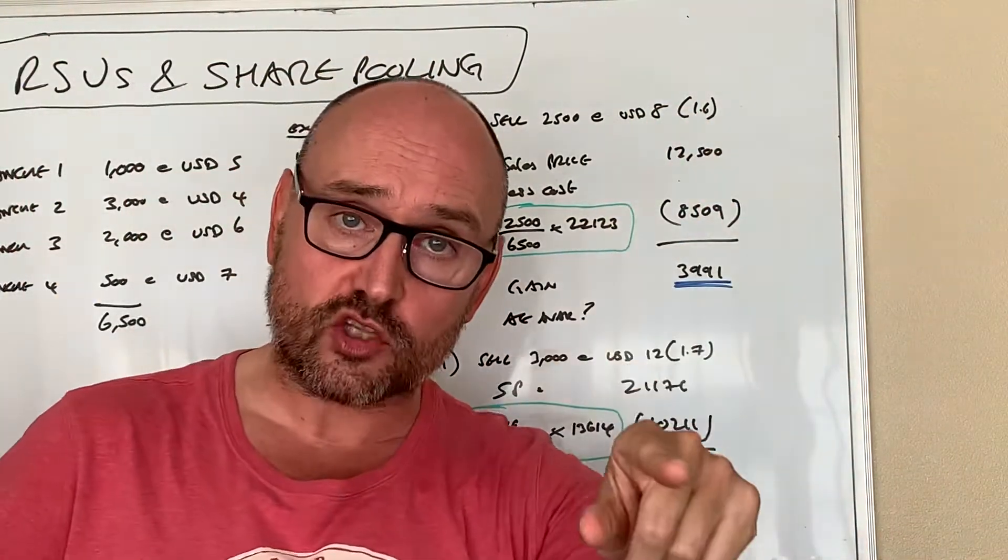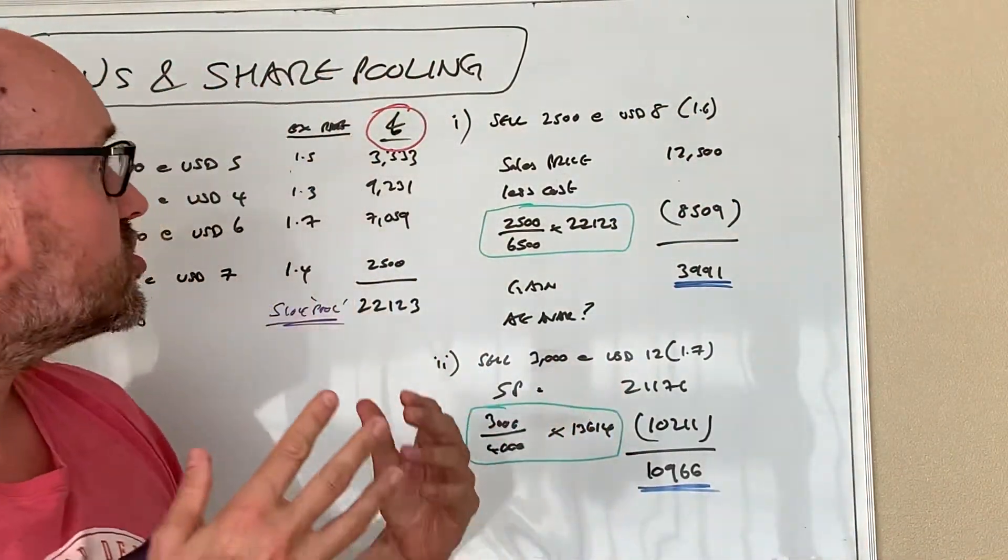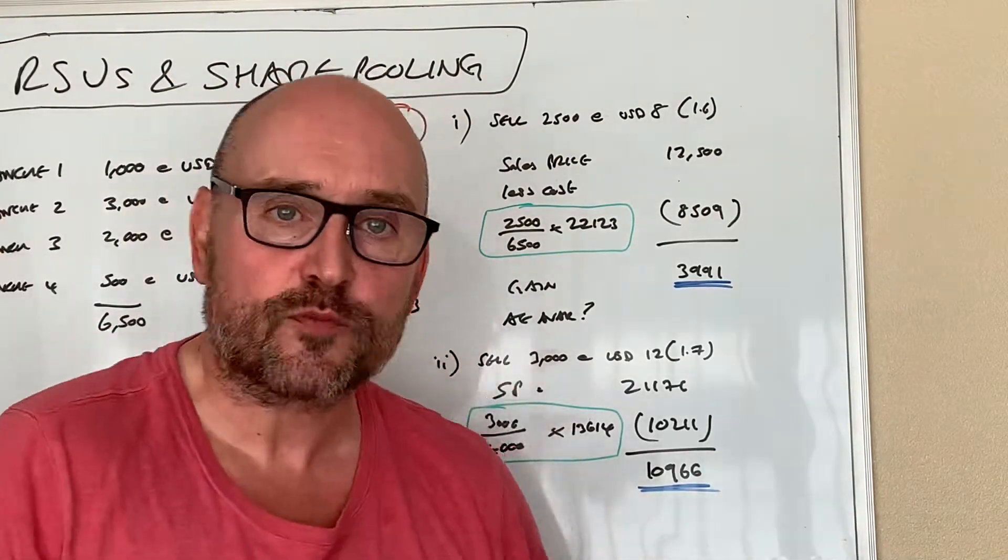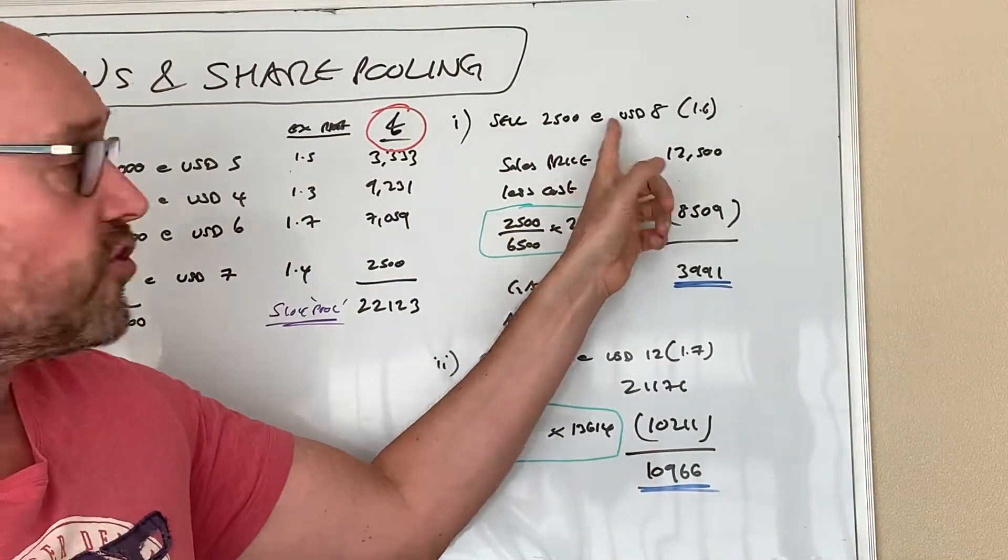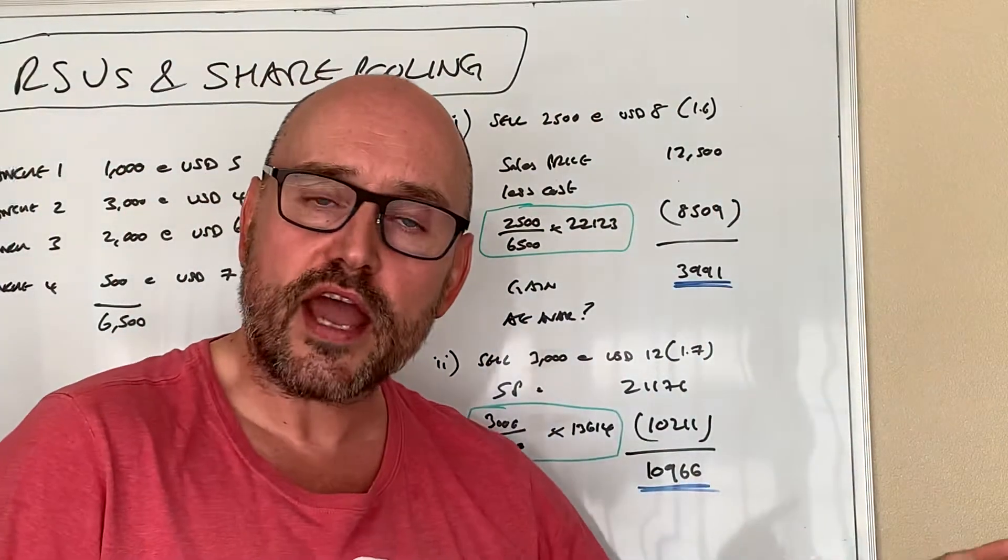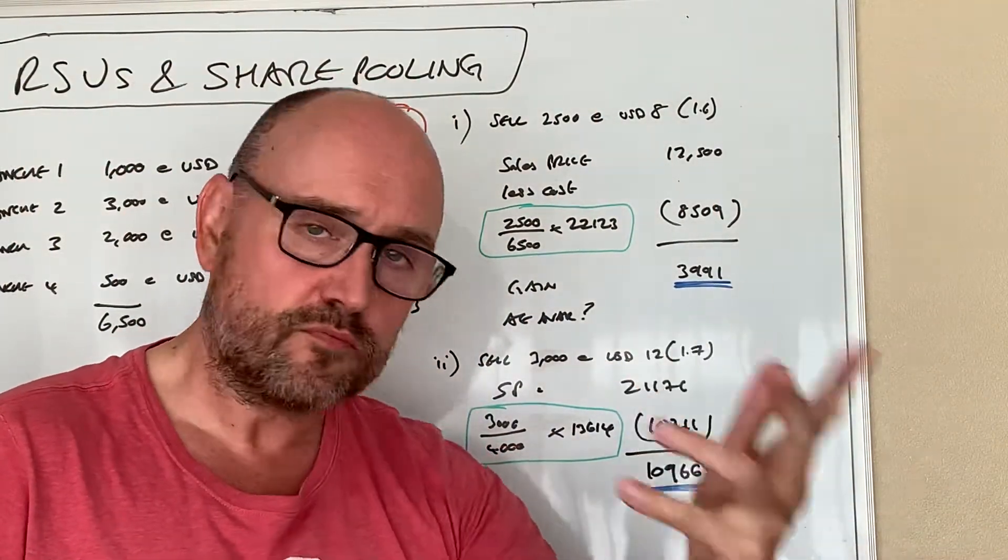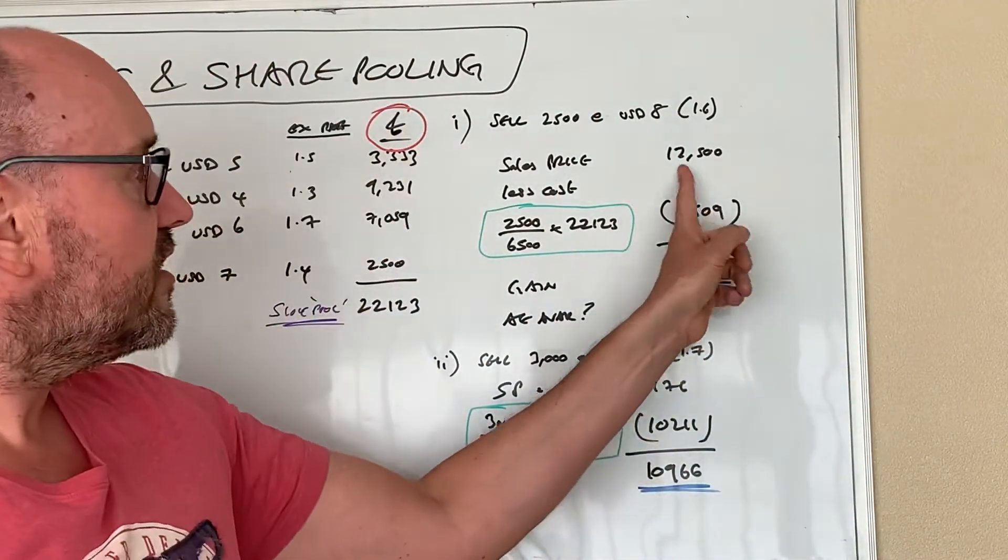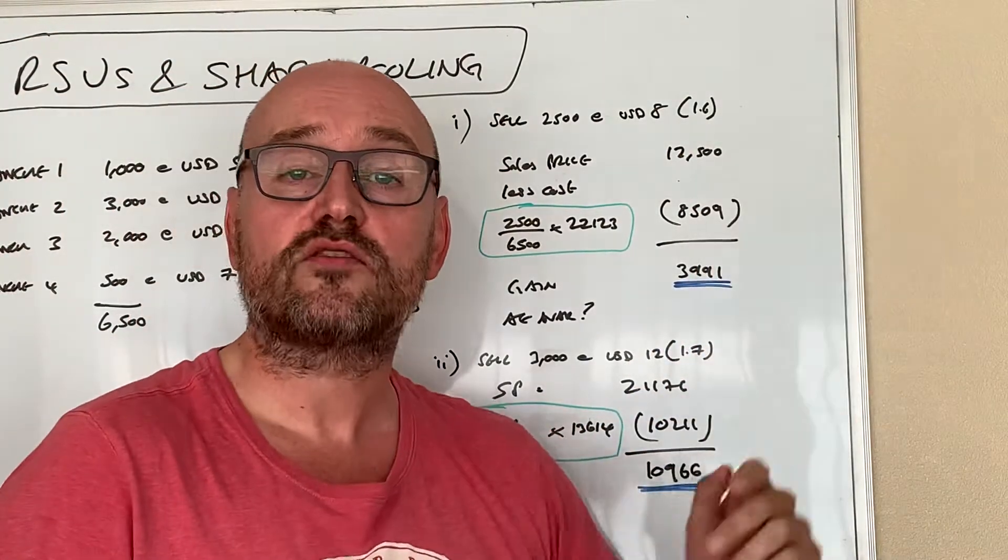For capital gains tax, the sales price is just two thousand five hundred times eight dollars a share divided by the exchange rate, sterling equivalent twelve thousand five hundred pounds. So that's what they receive on a sterling basis for selling two thousand five hundred shares.